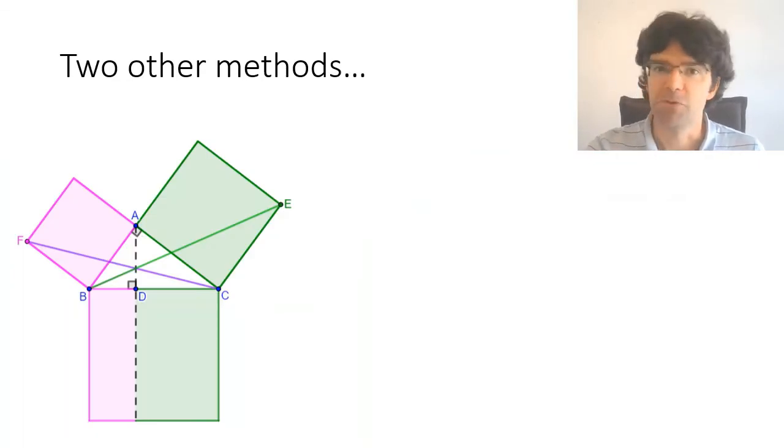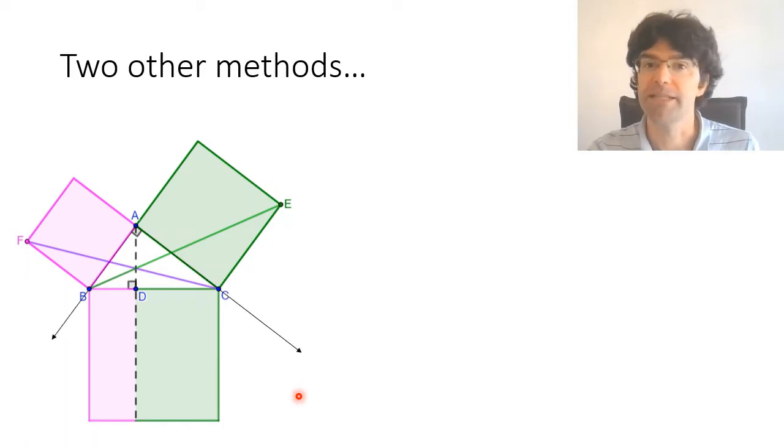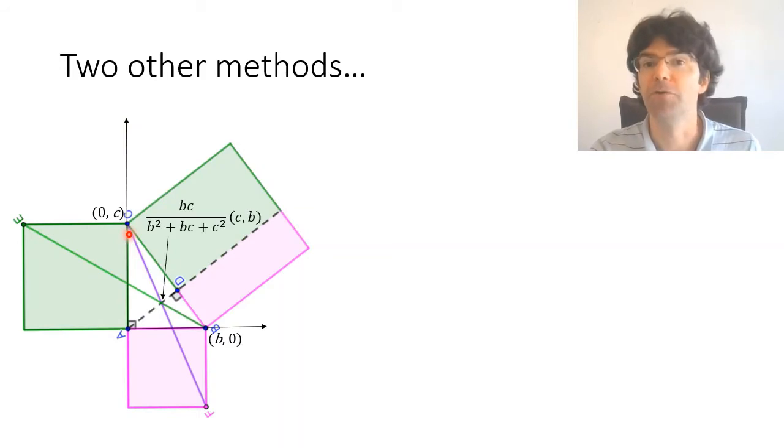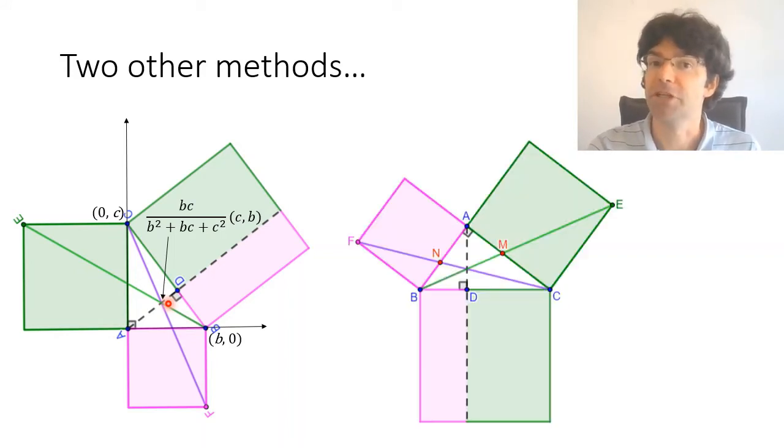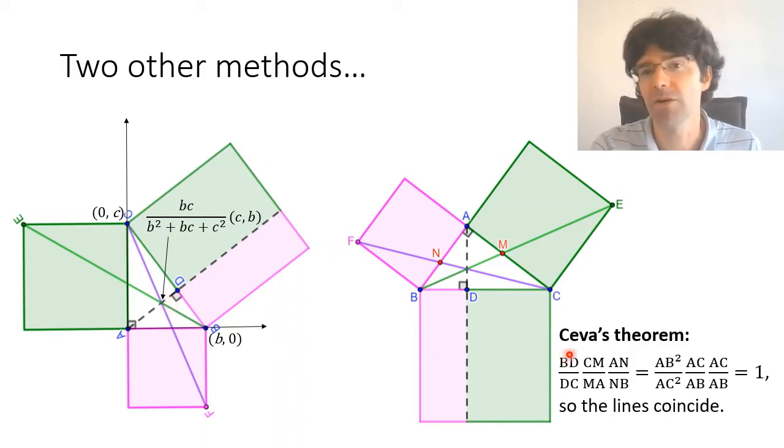Before we look at Heron's proof, I should maybe mention some other methods that we could use. The two that jumped out to me were firstly to set up a coordinate system with AB and AC as its axes. There's then a pretty standard technique for locating the intersection of BE and CF and then we can check that that's really on the line AD. And then secondly there's a very fast proof using Ceva's theorem if you're familiar with that. So I'm not going to say much about these approaches but by all means pause the video if you're interested in working through the points that I've put up on the screen.